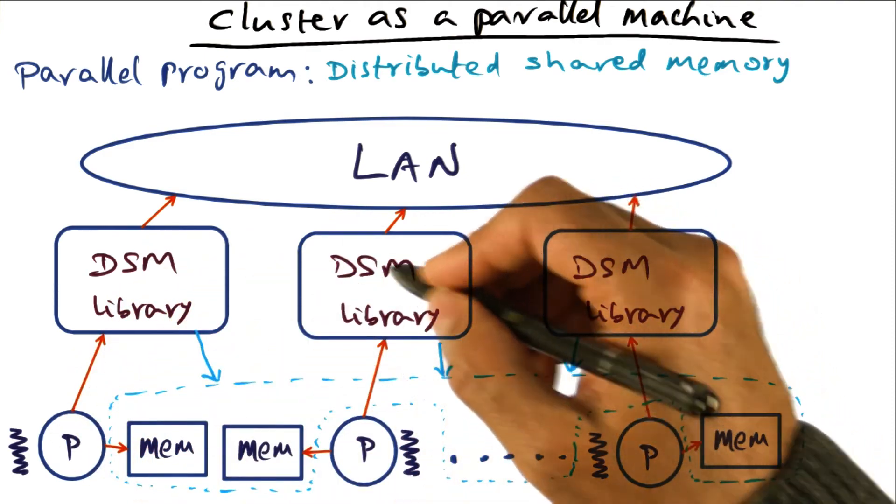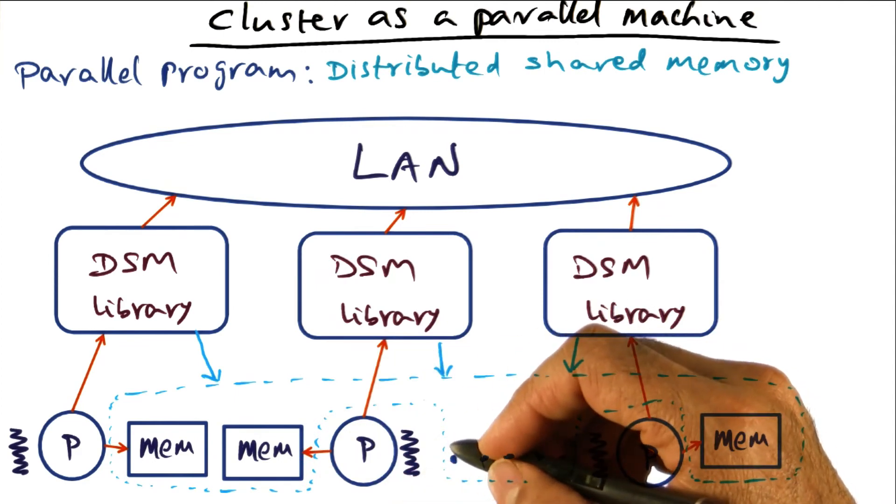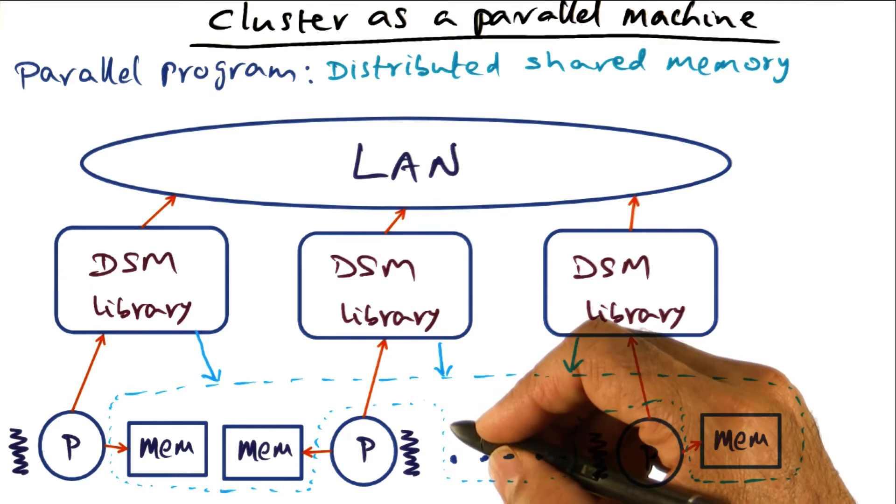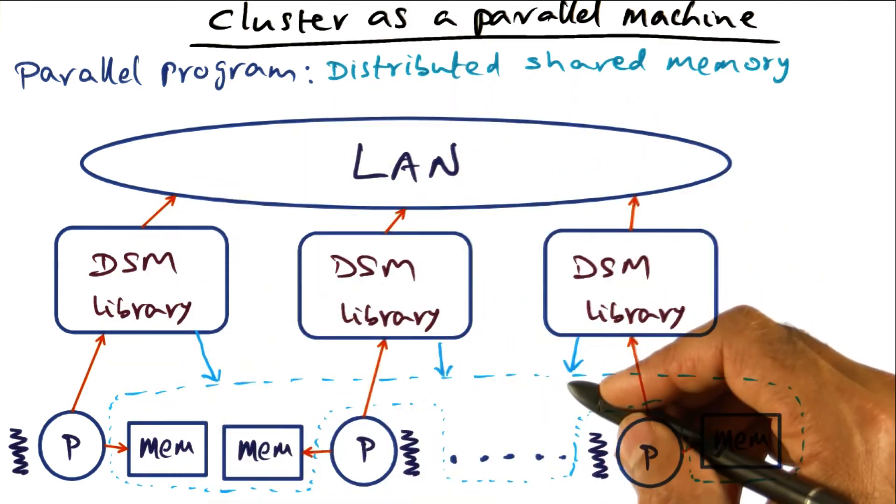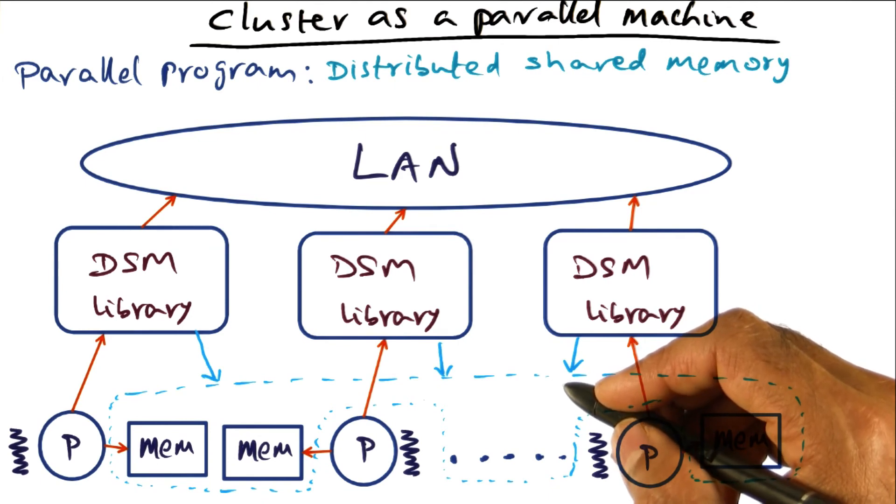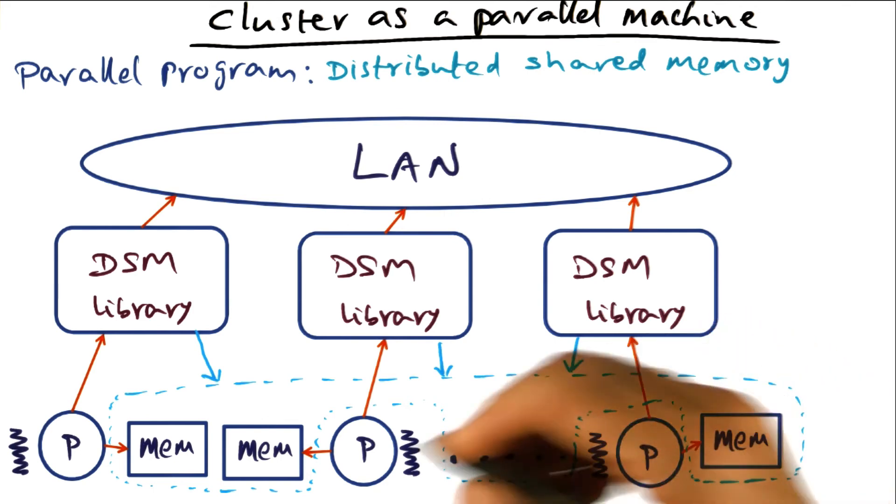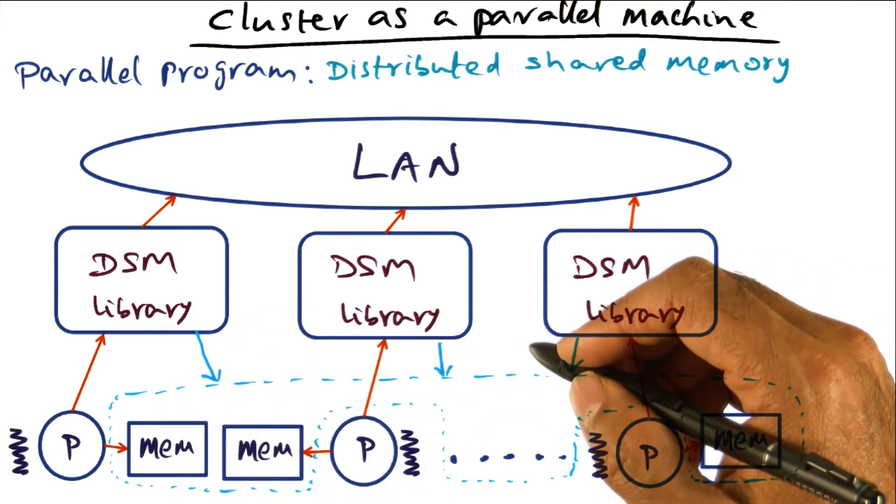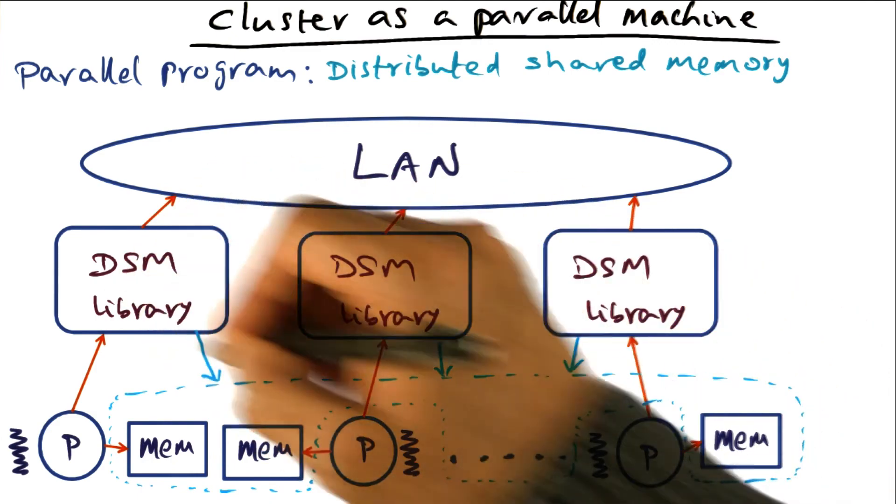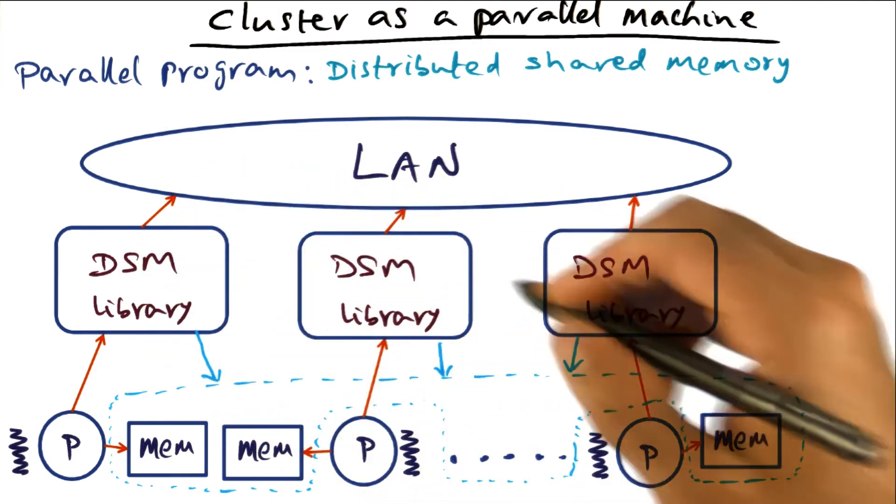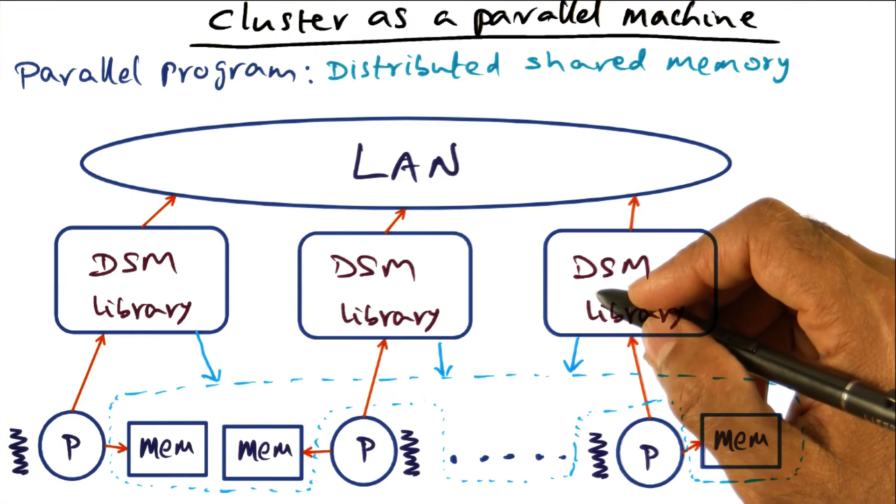In other words, the DSM abstraction gives the same level of comfort to a programmer who is used to programming on a true shared memory machine when they move to a cluster. They can use the same set of primitives, like locks and barriers for synchronization, and the pthread style of creating threads that will run on different nodes of the cluster. That's the advantage of the DSM style of writing an explicitly parallel program.